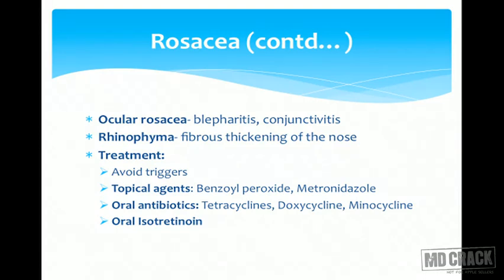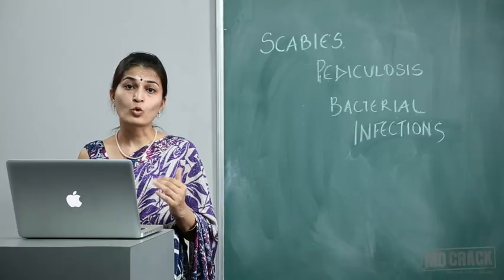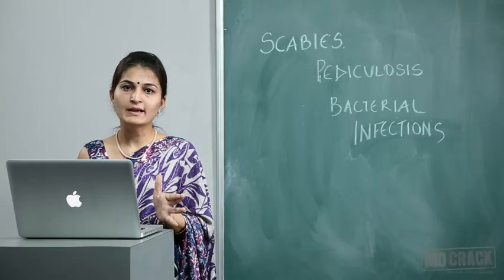Complications of rosacea include ocular rosacea — patients present with blepharitis and conjunctivitis. Due to chronic lymphedema, patients can develop rhinophyma, where there is fibrous thickening of the nose. Treatment: counseling is very important — patients must avoid all triggering factors. In milder cases, topical agents like benzoyl peroxide and metronidazole are used. In severe cases, oral antibiotics like tetracycline, doxycycline and minocycline are added, as well as oral isotretinoin for severe rosacea.